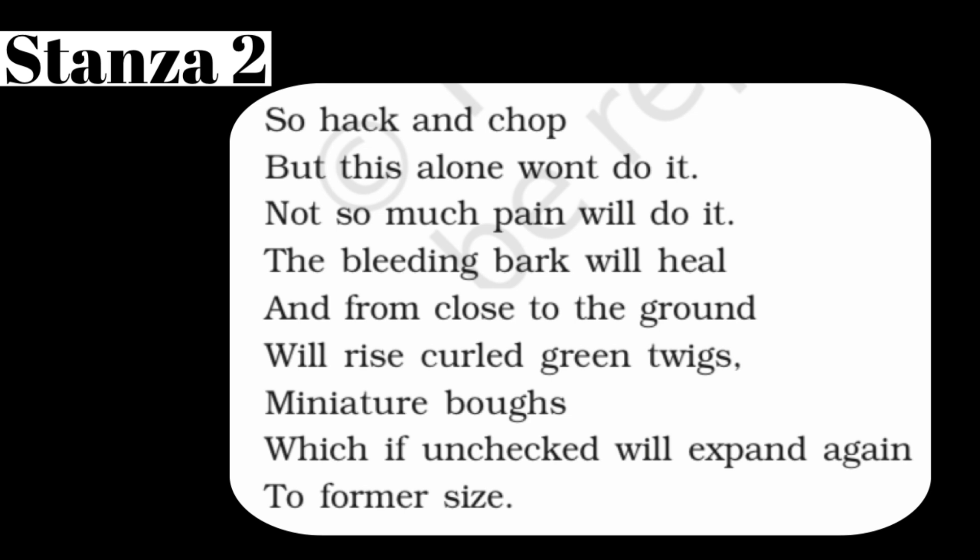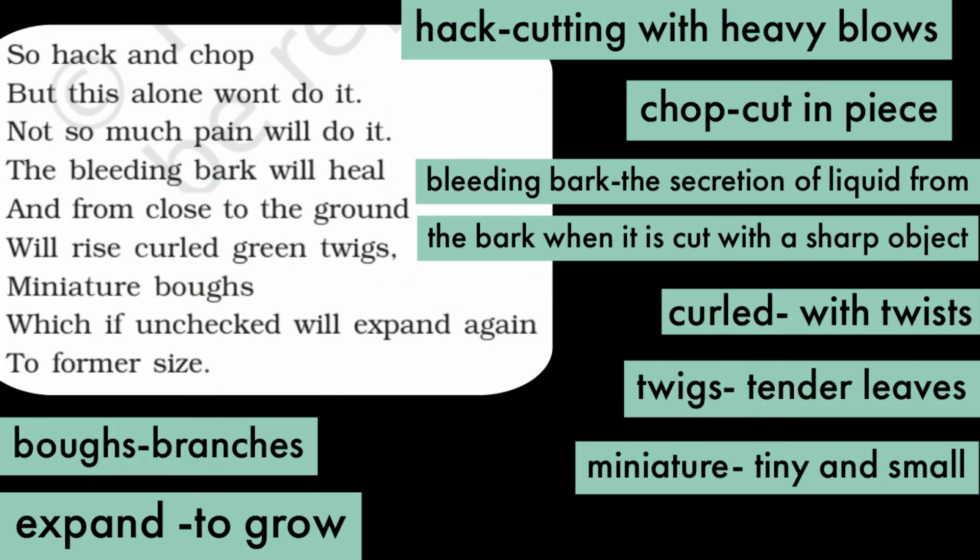Stanza two: 'So hack and chop but this alone won't do it, the bleeding bark will heal, and from close to the ground will rise curled green twigs, miniature boughs, which if unchecked will expand again to former size.' Glossary: 'hack' means cutting with heavy blows; 'chop' means to cut in pieces; 'bleeding bark' means secretion of liquid when cut; 'curled' means twisted; 'twigs' means tender branches; 'miniature' means tiny.